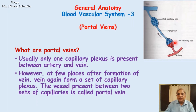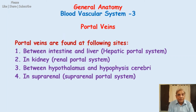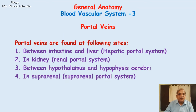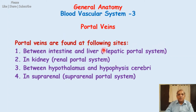Now I will move to the next slide. Portal veins are found at the following sites in our body, and they serve very important functions because of which these two sets of capillaries are formed. Number one: between the intestine and liver, and that is called as the hepatic portal system.